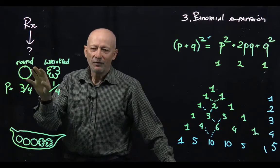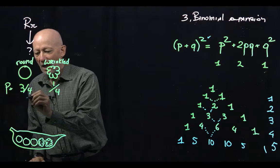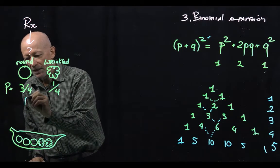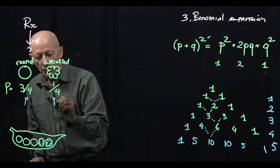Let's actually give letters to these numbers and we're going to call the probability of the round, we're going to call it little p, and the probability of the wrinkle we're going to call it little q.